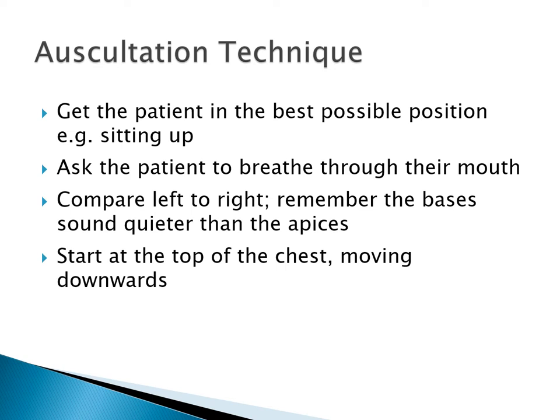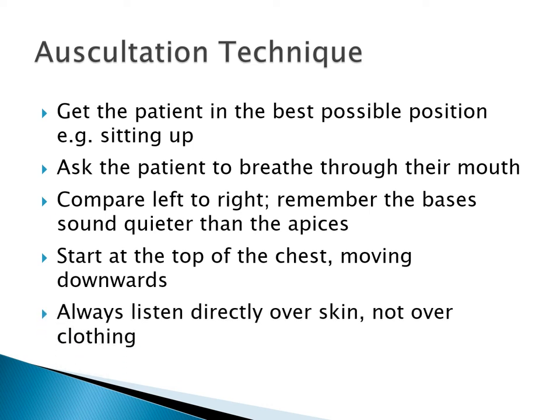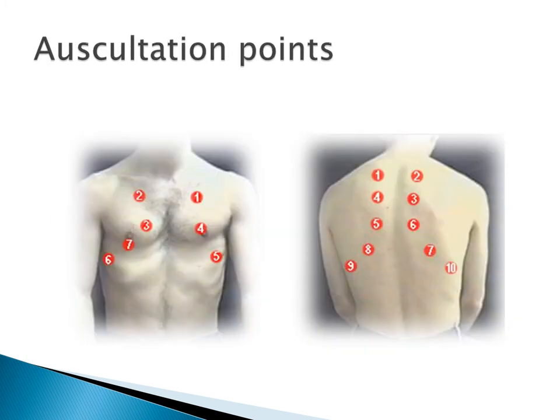Start at the top of the chest and move downwards, but comparing both sides: top left, top right, then mid-left, mid-right, continuing down while listening to both sides. It's best to listen directly over skin rather than over clothing, to avoid any additional sounds that make it difficult to interpret what you're hearing. The diagram shows the auscultation points — listening to one side then the equivalent point on the other side, moving down and making sure we listen equally.